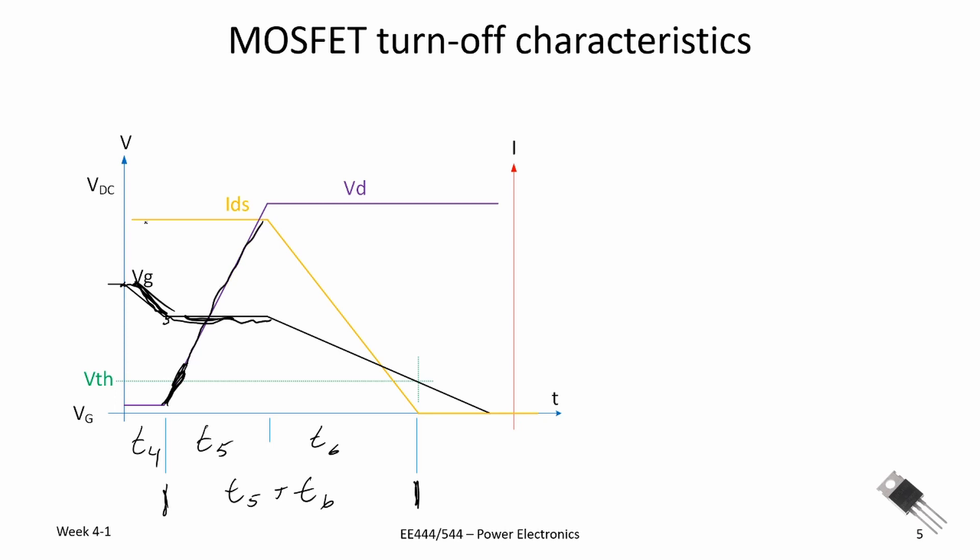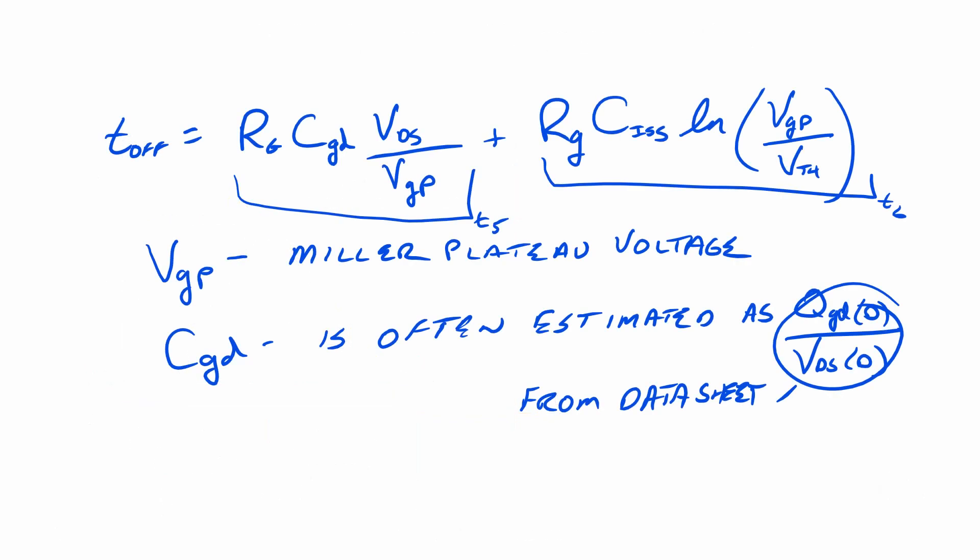The drain-to-source current stays constant until after the Miller plateau is reached, and then the drain-to-source current starts to fall. So the drain-to-source current falls during time T6. The voltage drain-to-source begins to rise as we're shutting the device off in period five. And again, I will put those equations up on the screen for you to review.